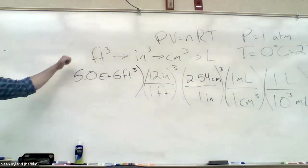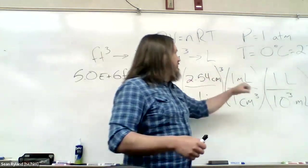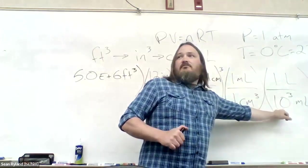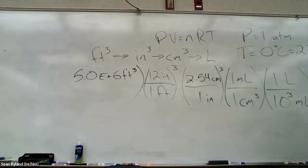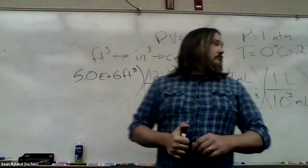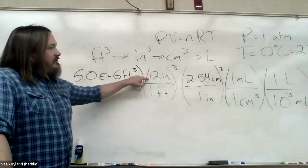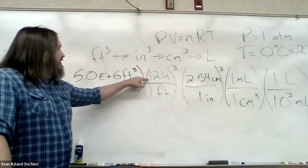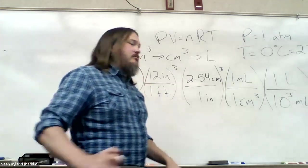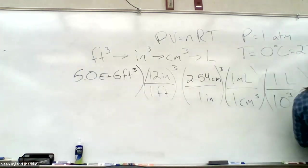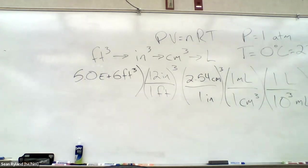But just to be careful with our units. So 5 million times 12 cubed times 2.54 cubed divided by a thousand is going to give us our liters of hydrogen gas. And so it should be something like... it's going to be something times 10 to the 7. I think maybe 8, but I think 7.